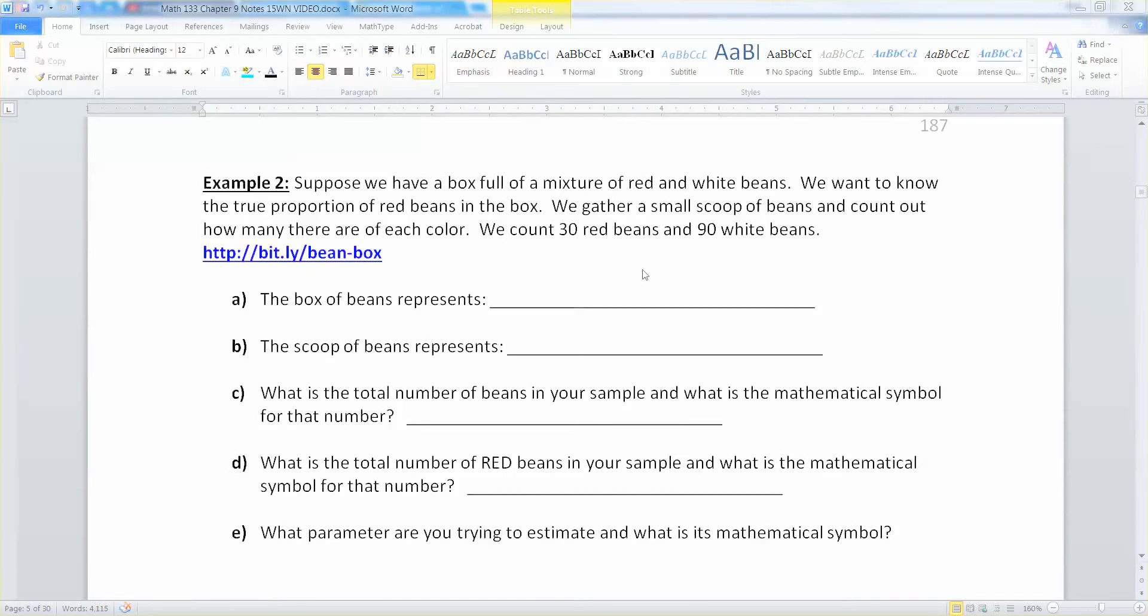Moving on to example 2 in section 9.1. Suppose we have a box full of a mixture of red and white beans. We want to know the true proportion of red beans in the box. We gather a small scoop of beans and count out how many there are of each color. We count 30 red beans and 90 white beans.